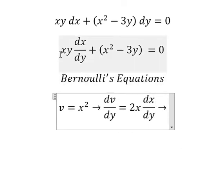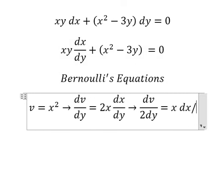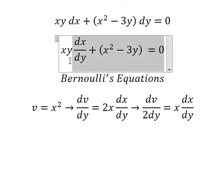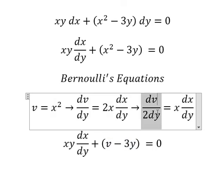Because we don't have number 2 in here, so we divide both sides by 2. This one we change by v, this one we change by this one.